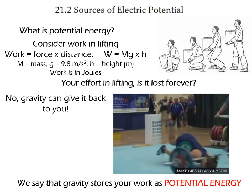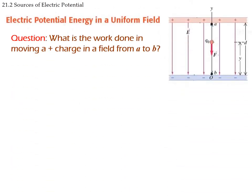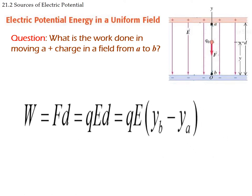In the electric case, consider a uniform field created by two plates — one positive and one negative — so we have a uniform field pointing down. Now we want to move a positive charge from point A to point B, where point A is up here and point B is down here. The work done is going to be force times distance again.